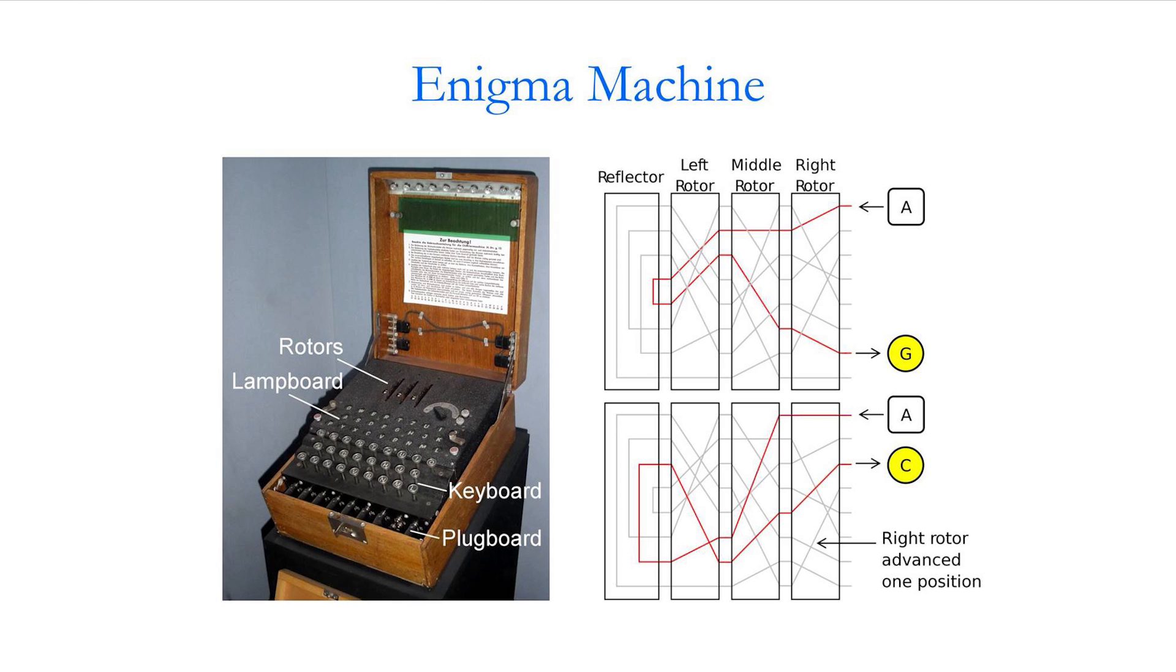Then the first rotor would rotate again, and after the first rotor has rotated 26 times, the second rotor rotates once. And after this one has been made to go around after the appropriate number of key presses, the third one goes round. So it's what's called a polyalphabetic cipher.